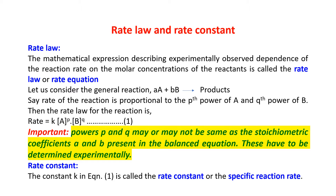In this lecture, we will do an elaborate study of order of reaction. Let us start with rate law and rate constant. What is rate law? Rate law is an experimentally observed dependence of reaction rate on molar concentration of the reactant. We get a mathematical expression and that is known as rate law or rate equation — it is a mathematical expression describing experimentally observed dependence of the reaction rate on the molar concentration of the reactant. That means it is an experimental value.